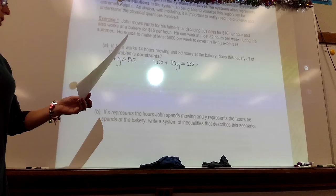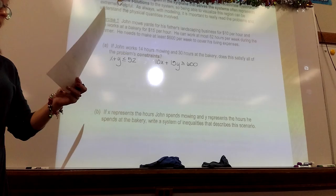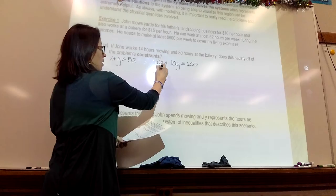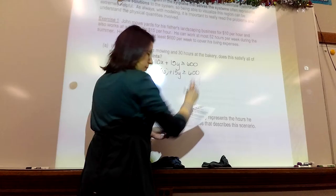Part C says, if John must work a minimum of 10 hours for his father, will he be able to make enough to cover his living expenses. Show the work that leads to your answer. So, all we have to do, this part we don't have to worry about right now. We have to see if that's going to work.